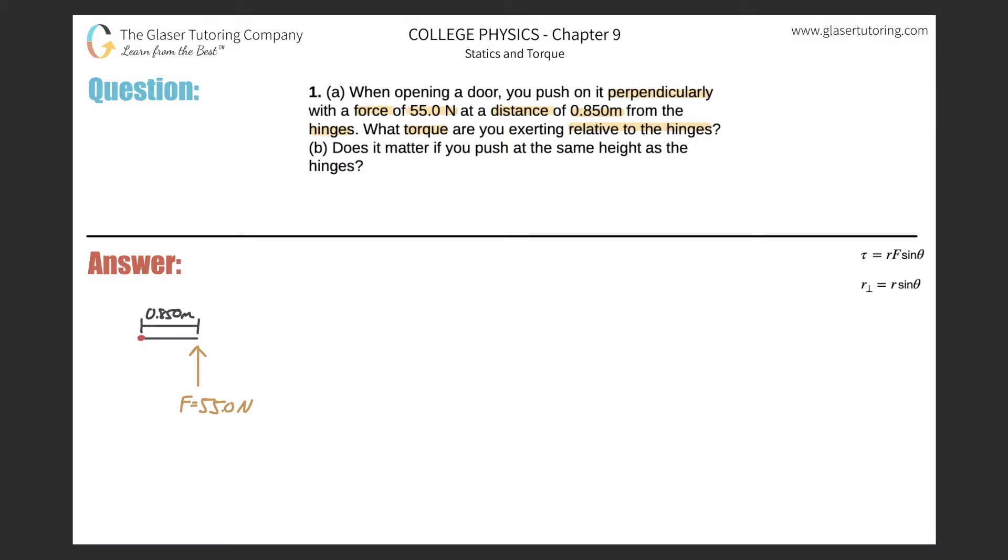Now, thinking about this question and solving for torque, we have to use the torque formula over here on the right. So for letter A, the torque is equal to R, which R represents the lever arm. And basically what the lever arm is, the lever arm is going to be the distance between the axis of rotation and the applied force.